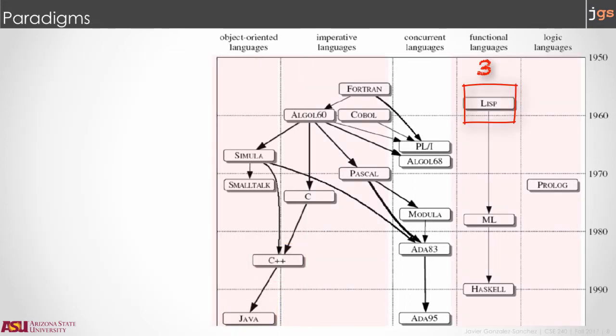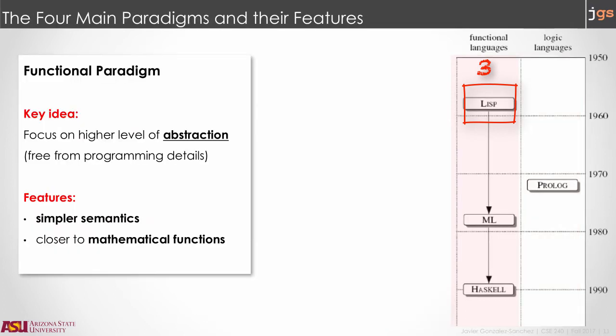Functional languages are a little bit different. They evolved in a different path. The key idea of functional languages is that they offer a higher level of abstraction. In particular, that means a simpler semantics. We're going to learn Lisp in order to explore features of this paradigm. But for now, let's take a look at one example.